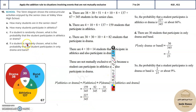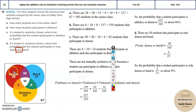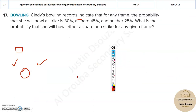For the last problem, they said 'and' — drama and band — so don't use the plus formula; that's only for 'or.' Here you just find the intersection of drama and band, which is 30. So the answer is 30 divided by 345, about 9 percent.